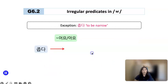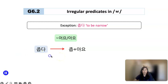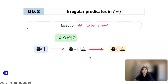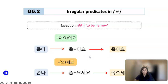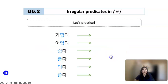However, that doesn't mean all verb and adjective stems ending in ㅂ are irregular. Some of them are regular. Here's an example: 좁다, meaning 'to be narrow' or 'to be small' — you use this adjective to describe a room. This is a regular predicate, so you follow the regular rule: ㅂ is not removed because it has an 오 sound. It conjugates as 좁아요, and the honorific form is 좁으세요.